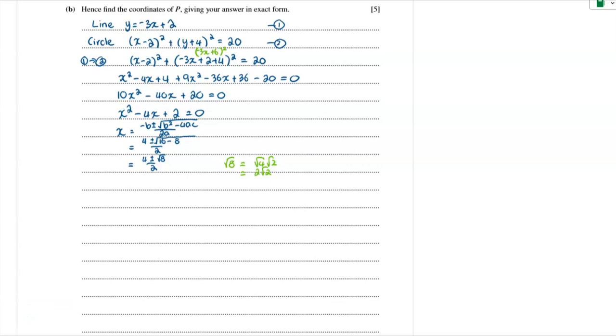So for x, we know the solution is 2 plus or minus root 2. But we want the smaller x value. Remember, there are two points of intersection. And so the smaller x value would have to be where x is equal to 2 minus root 2.